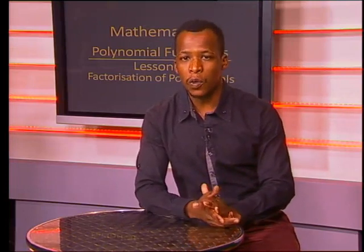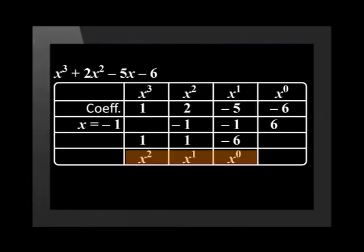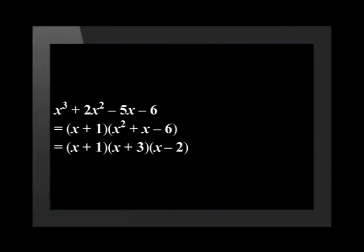The values in the fourth row give us the coefficients of the trinomial in descending order. This gives us x plus 1 multiplied by x squared plus x minus 6. The next step is to factorize the trinomial, which gives us x plus 1 multiplied by x plus 3 multiplied by x minus 2.